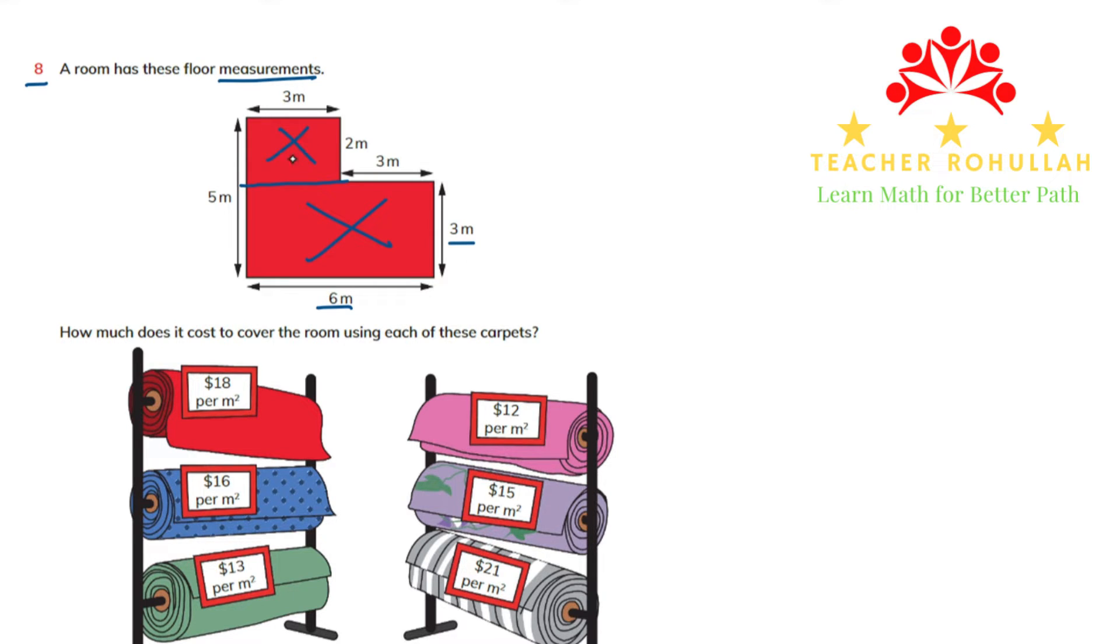So to find out the area of the upper one we multiply three by two. I will write it A1 and this one A2. A1 will be equal to 3 meters times 2 meters. So 3 times 2 is 6 and meter times meter is square meter. So the area of this small shape is 6 square meters.